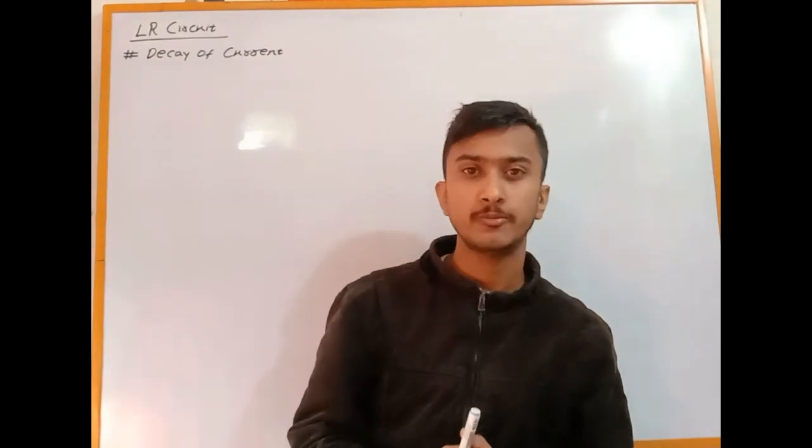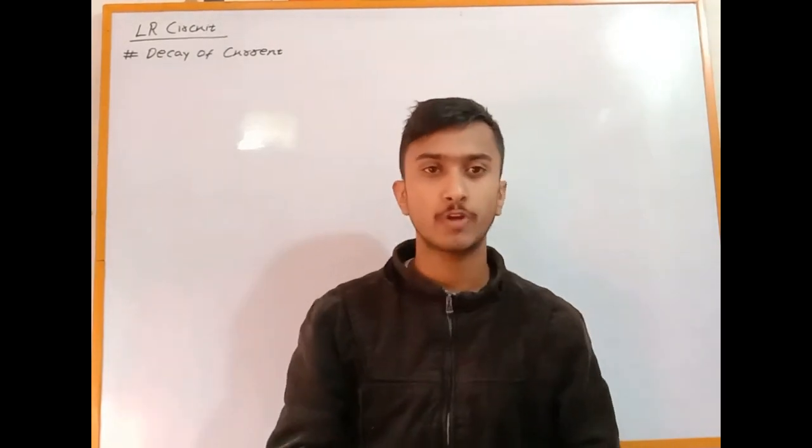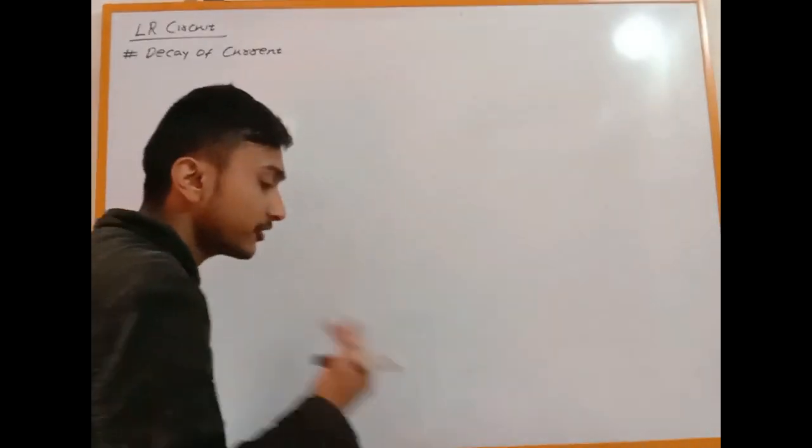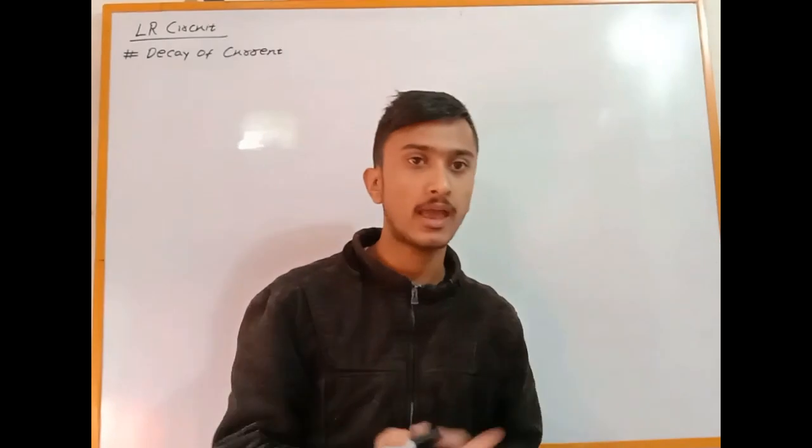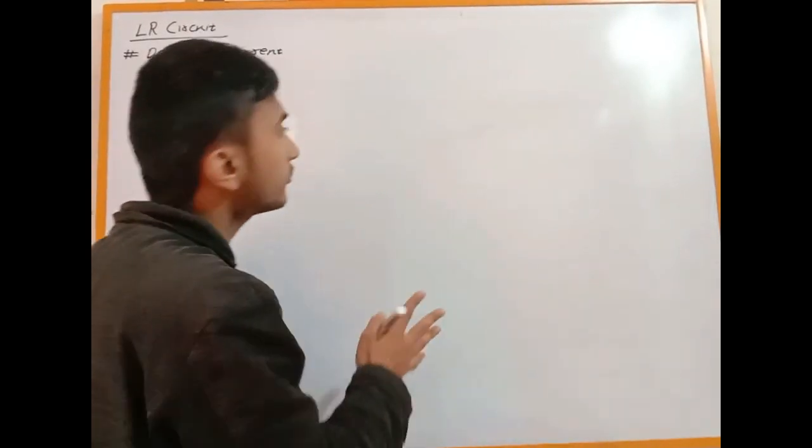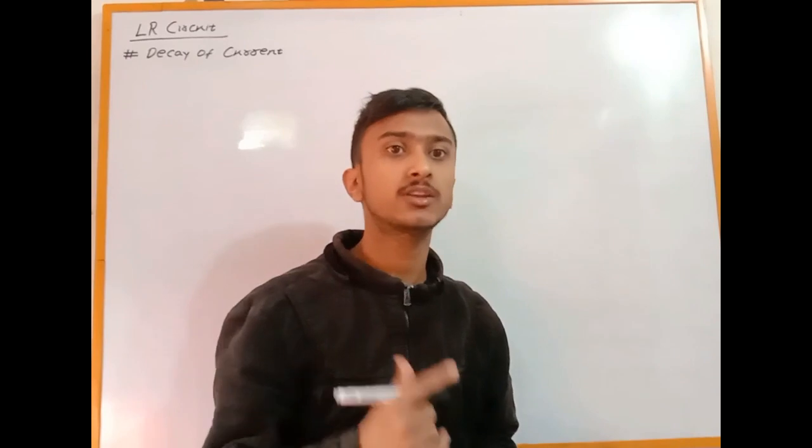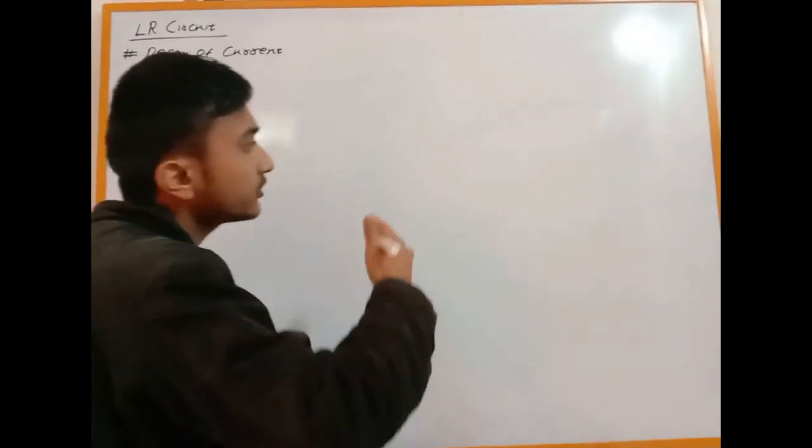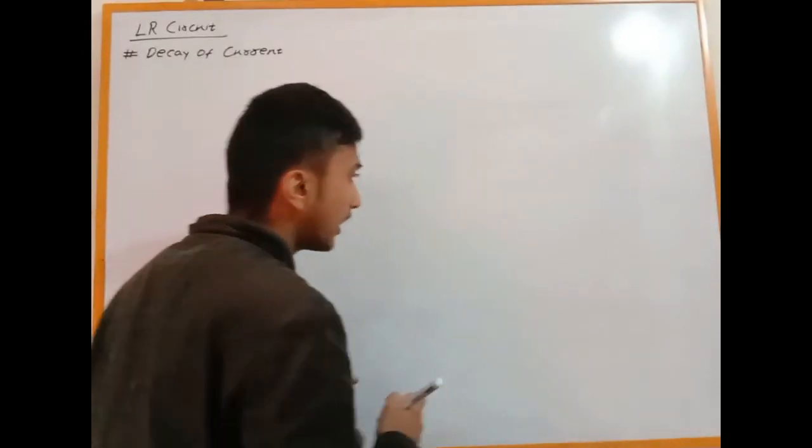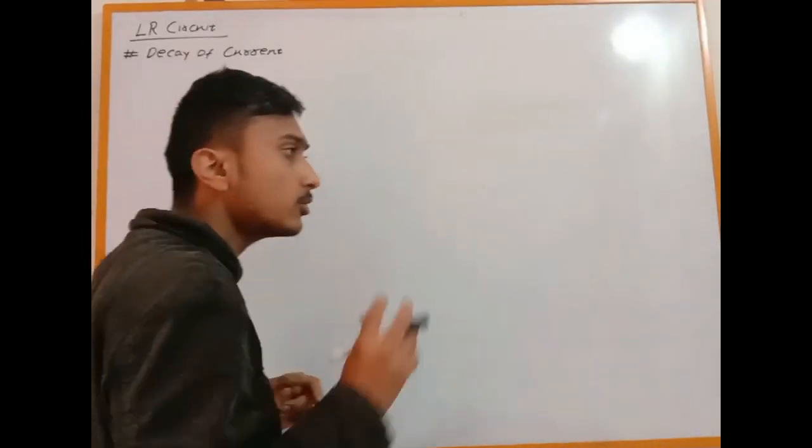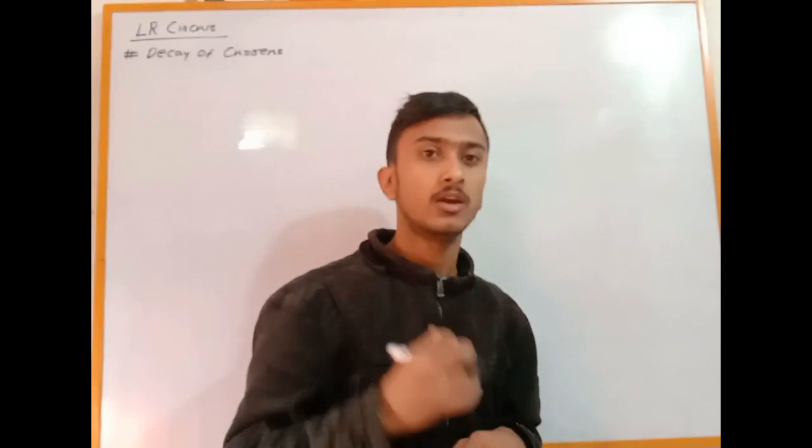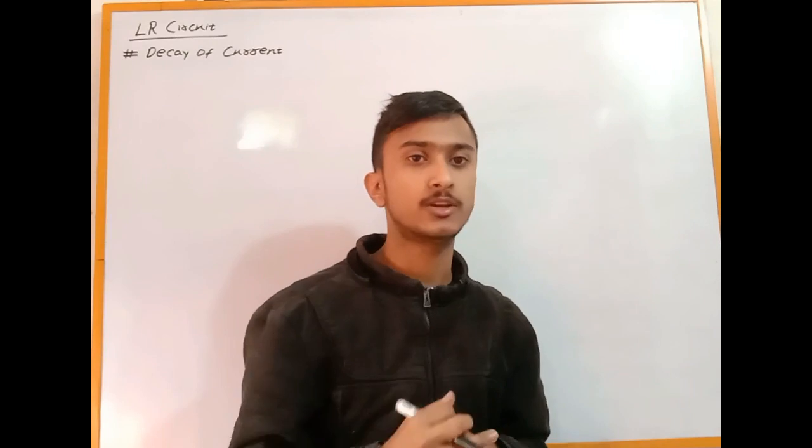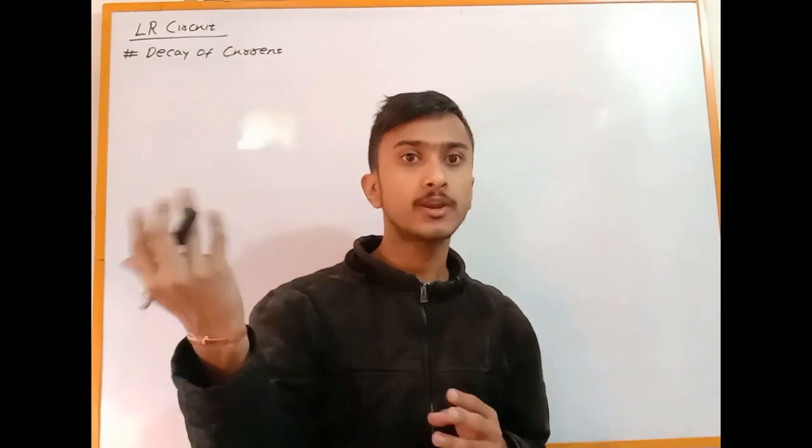Hey everyone, this is a quiz video on LR circuit decay of current. In the last video, I covered LR circuit rise of current. An LR circuit has an inductor and resistor in series with an EMF. The expression I derived showed exponentially growing current. Now I'll demonstrate the exponential fall of current.